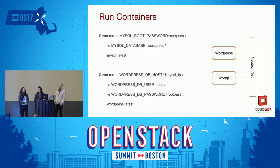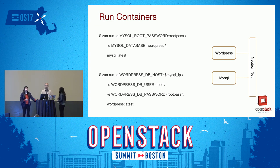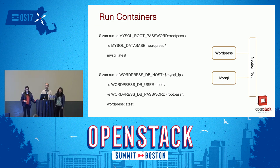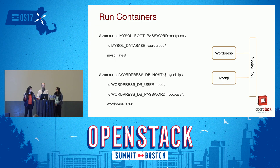Now let's look at how to use the Zun CLI to run applications on the OpenStack ecosystem. In this demo, two containers share the same network: one is WordPress, the web server container, and the other is MySQL, the DB container. They interact using IP addresses. The first command is Zun run, which sets the environment variables and uses the image. The second command, for the WordPress web server, fetches the IP address of the MySQL container and sets the environment variables and image.